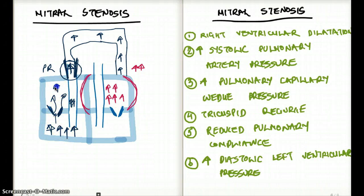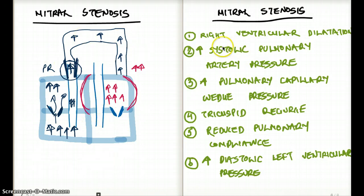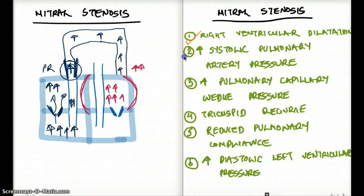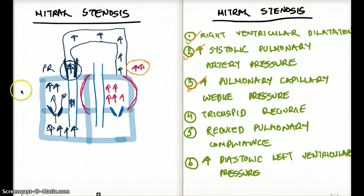The pressure in the right atrium is also going to be high. So in isolated mitral stenosis, all these things are happening. Quick review: right ventricular dilatation — yes, that can happen. Increased systolic pulmonary artery pressure — yes, it's going to happen. Increased pulmonary capillary wedge pressure — that is also going to happen. Tricuspid regurgitation — yes, it's going to happen.